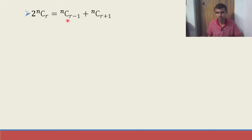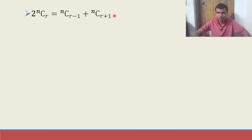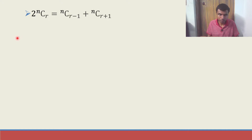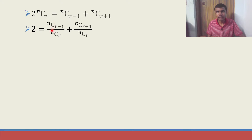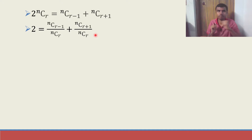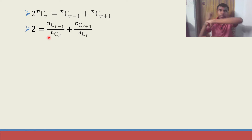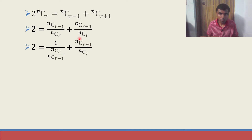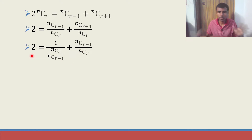So: 2·nCr = nC(r−1) + nC(r+1). Now divide both sides by nCr, sending nCr to the RHS denominator: 2 = nC(r−1)/nCr + nC(r+1)/nCr. I want these in the form nCr/nC(r−1), so invert: 2 = 1/[nCr/nC(r−1)] + nC(r+1)/nCr.